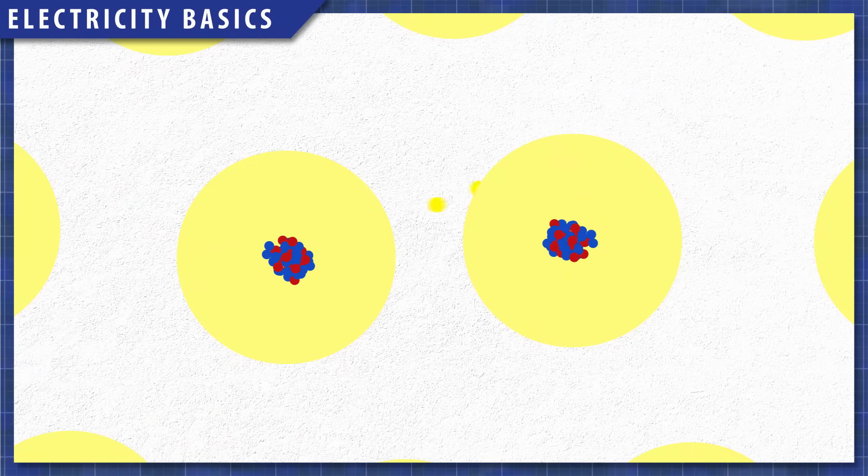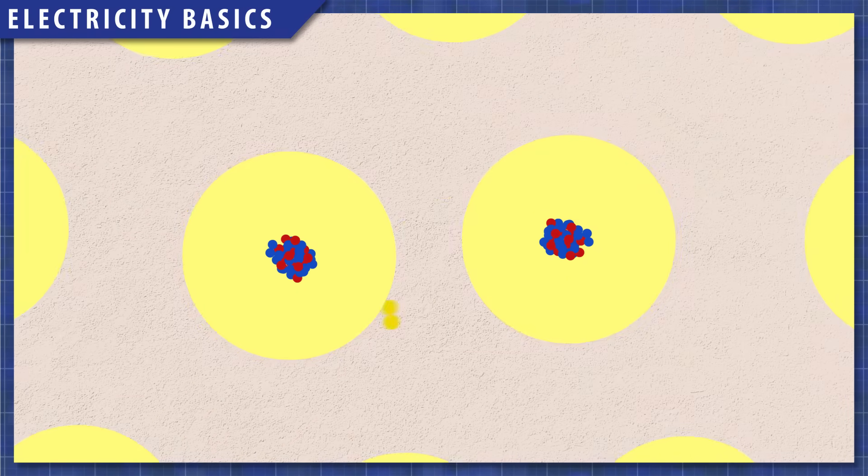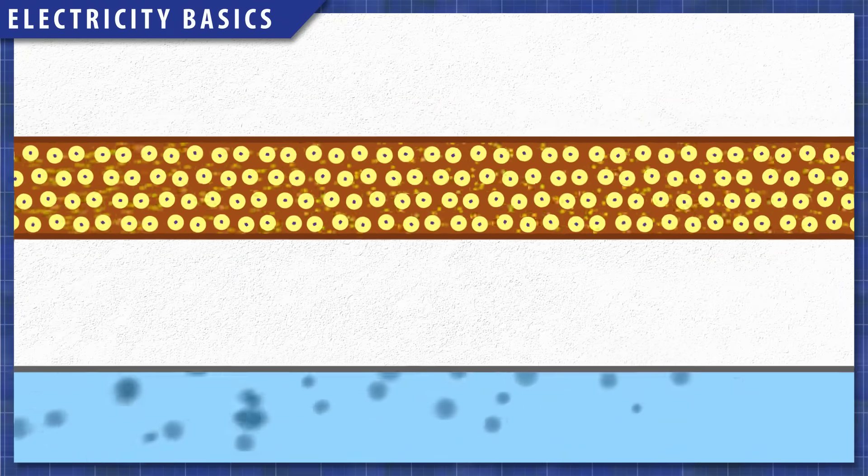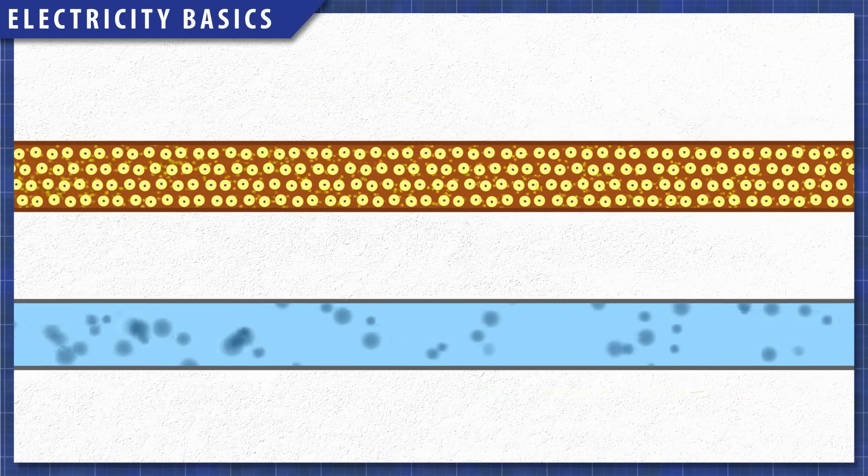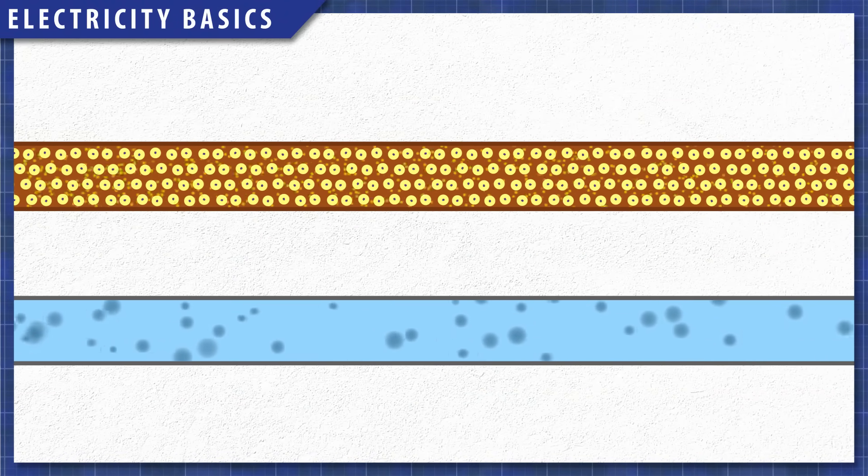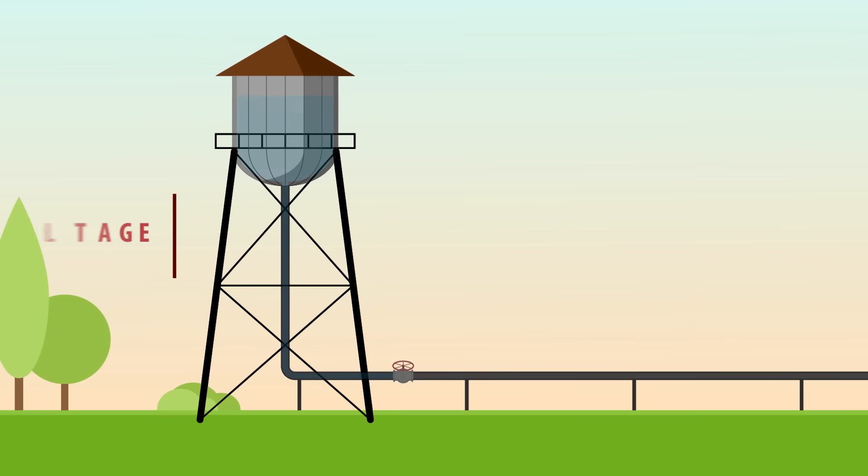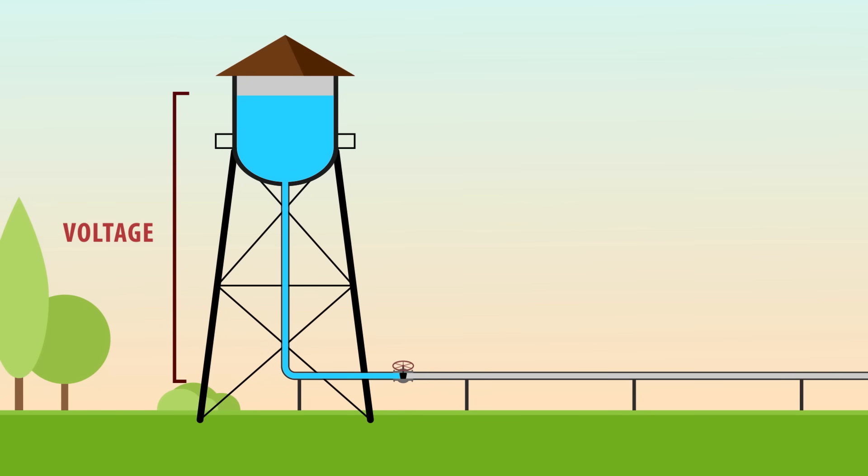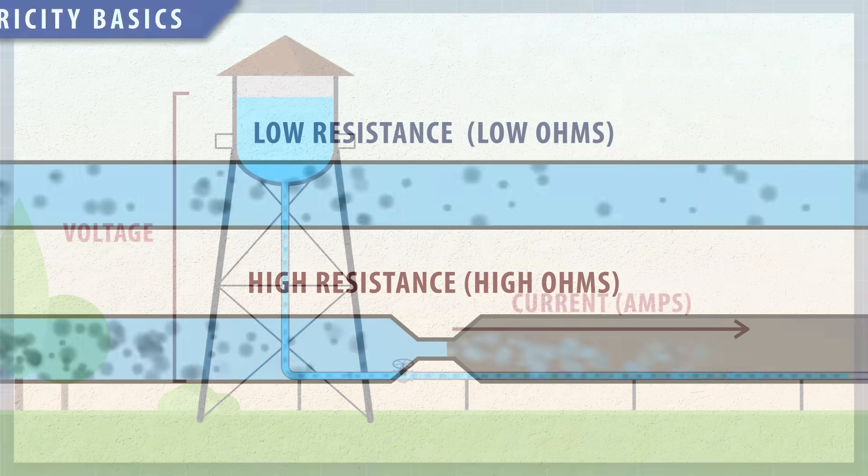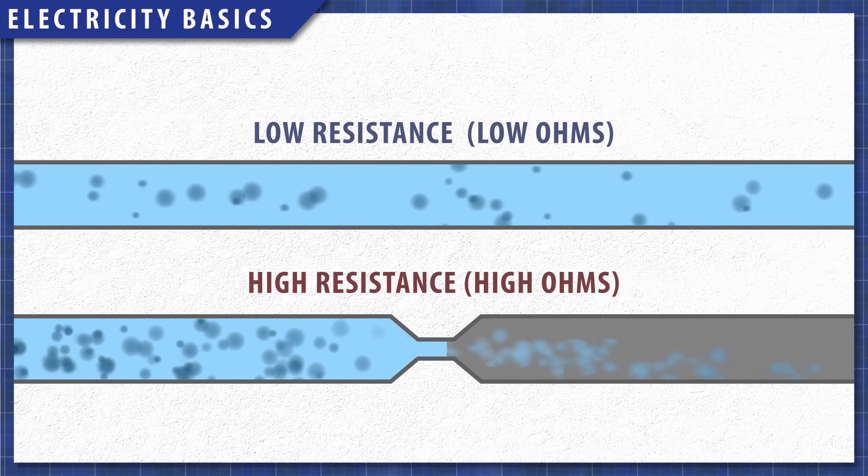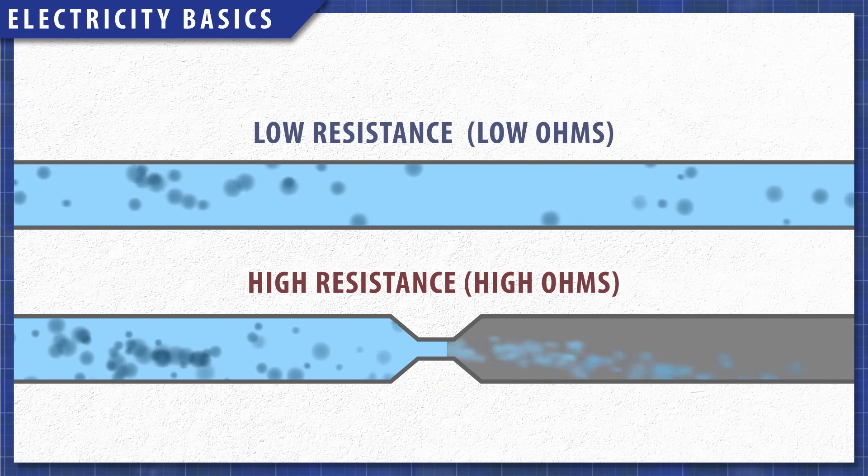To understand what a multimeter can measure, let's quickly review some fundamentals. Electricity is the movement of electrons from one atom to another. The flow of electrons through a wire is somewhat similar to the flow of water inside a pipe. Voltage or potential difference is the pressure from the power source that pushes the electrons through the wires. Current or amperage is the flow of electrons within a circuit. Resistance measured in ohms is the amount that a material will resist the flow of electrons.